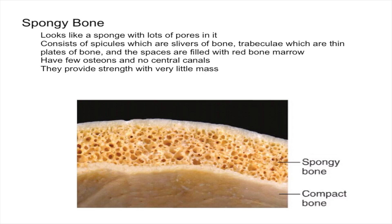However, spongy bone has a greater surface area than compact bone and it's much more vascular, meaning it has a lot more blood vessels than compact bone. In terms of long bones, spongy bone tissue is generally found at the ends of long bones, near the joints.